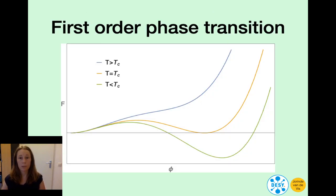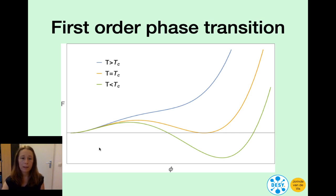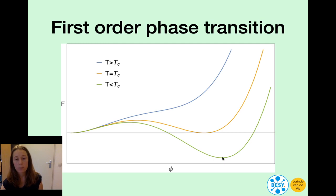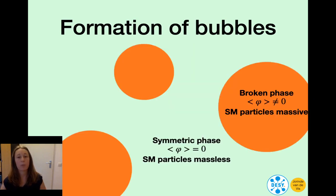So how does one get a first-order phase transition? This depends on the finite temperature effective potential of your scalar field. Let's look at this scalar field phi — you can think of it as the Higgs field, but it could also be another field. At large temperature its potential has a minimum only at a field value of zero. As the temperature lowers, a second minimum develops, and as the temperature becomes lower and lower, this minimum actually becomes energetically favorable. A phase transition is first-order if there is a bump between the two minima, and then the field tunnels from the false vacuum to the true vacuum. This proceeds by the formation of bubbles.